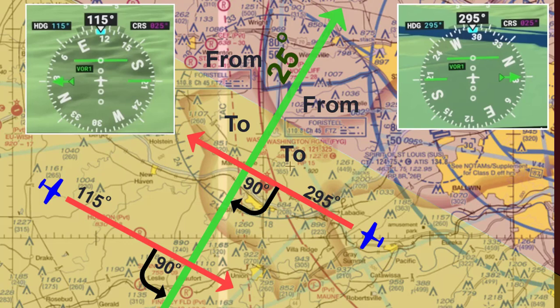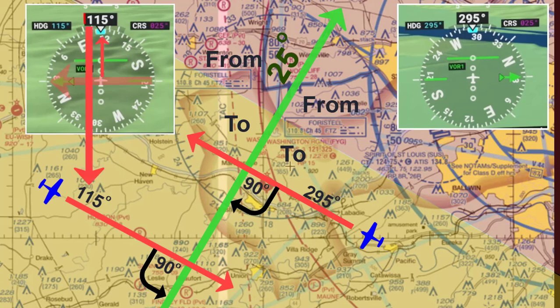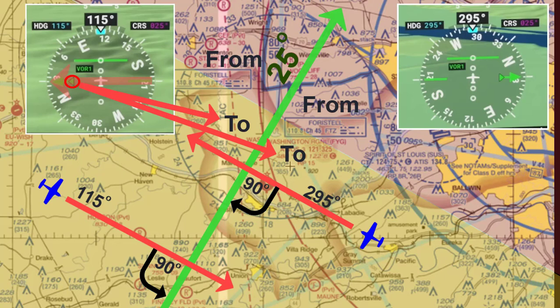Looking at a still shot of the HSI, we again have the CDI needle pointing to a 25-degree heading corresponding to the radial. We are flying a current heading of 115 degrees and are using our heading bug and autopilot to maintain that heading. Notice once again the TO arrow indicating we are on the TO side of the VOR as it relates to the 25-degree radial.